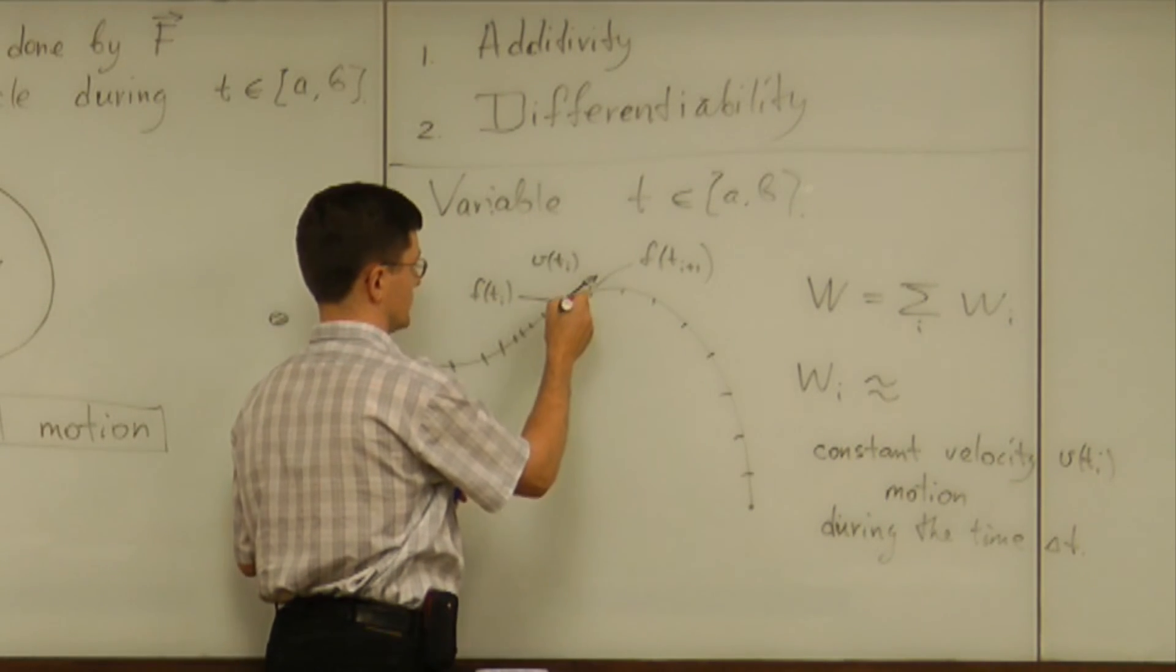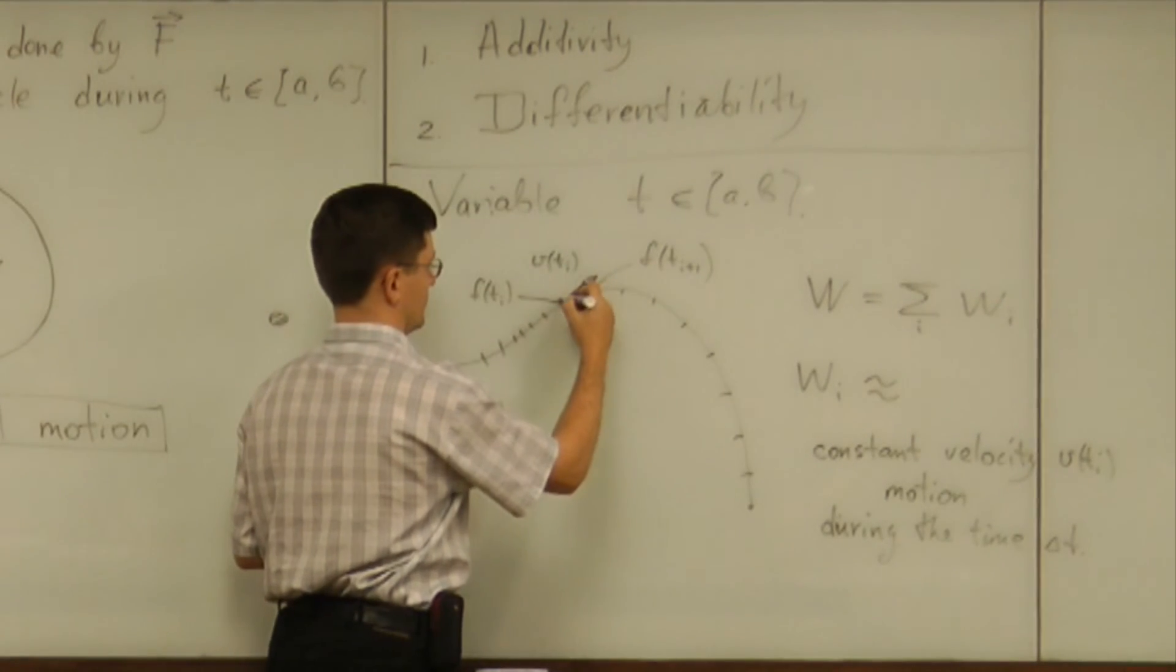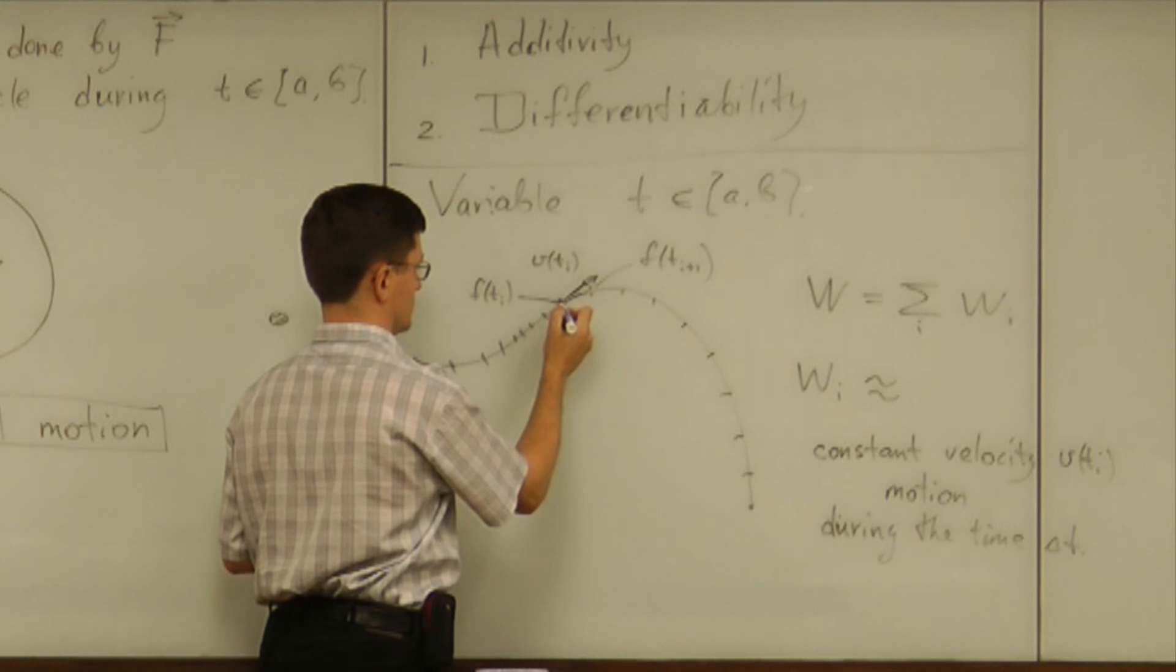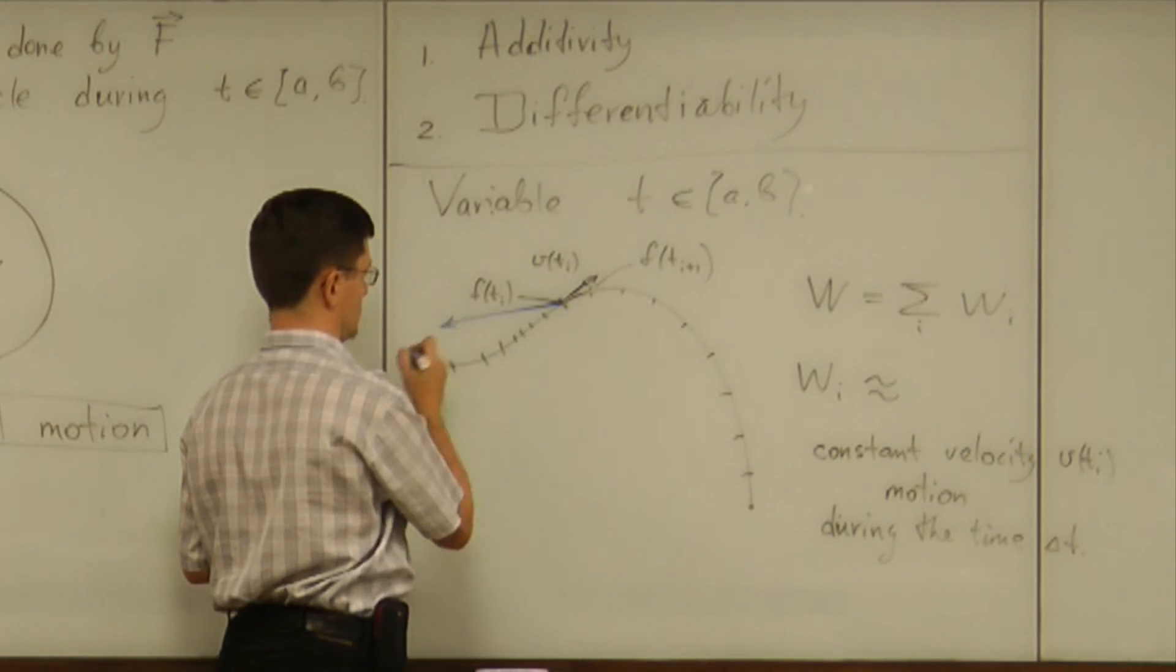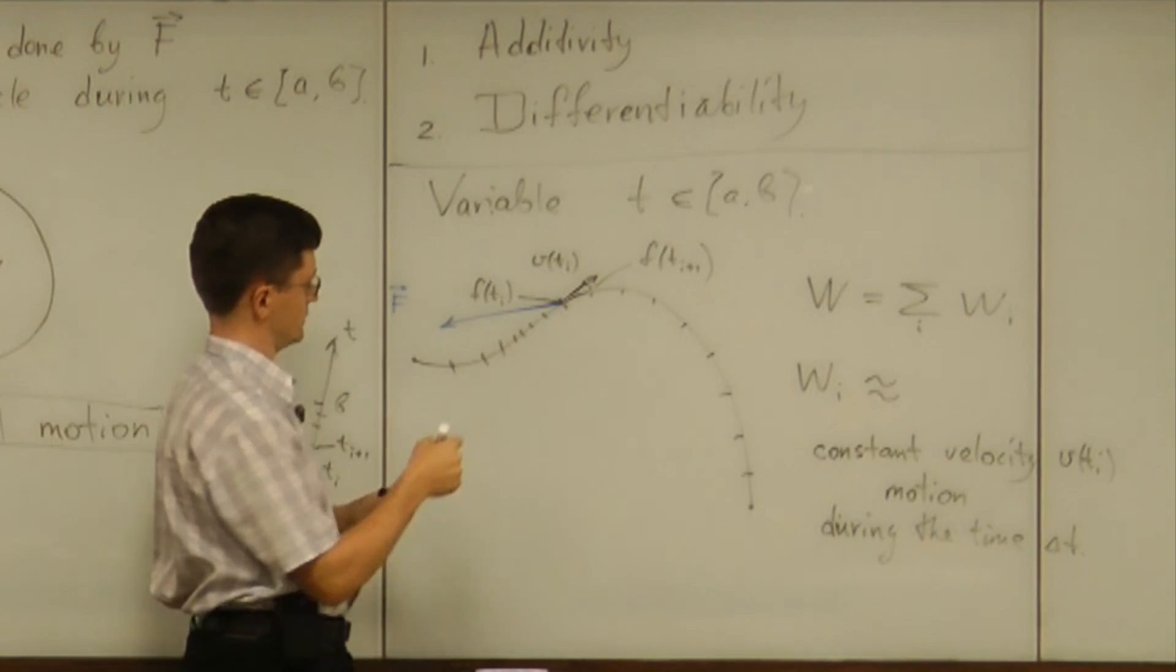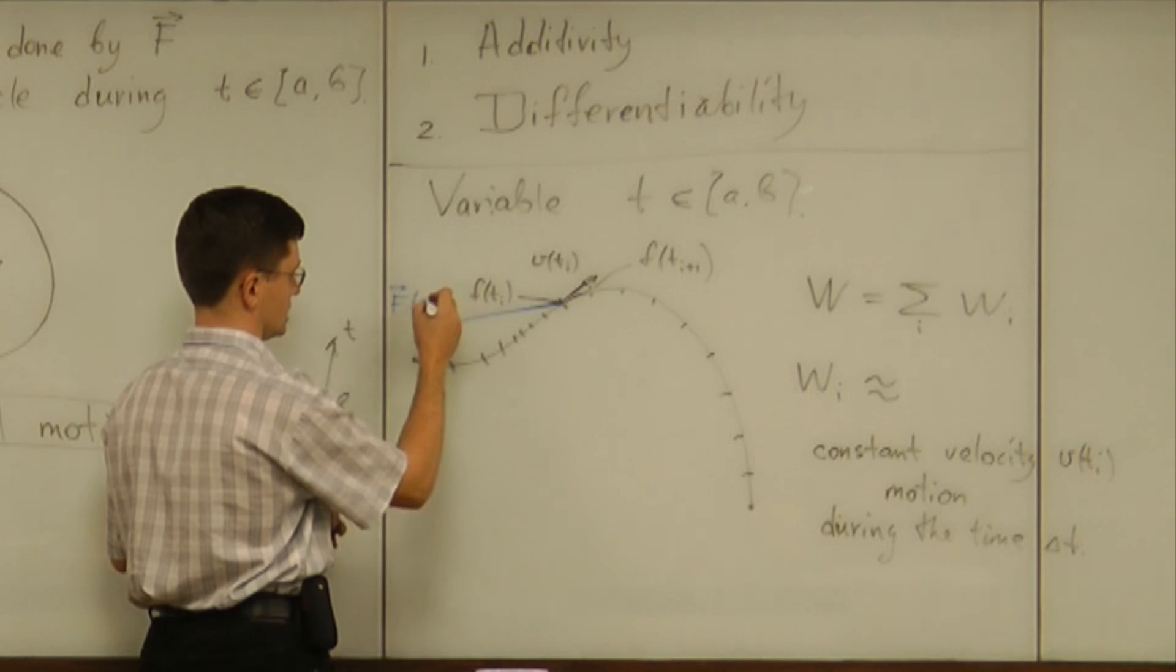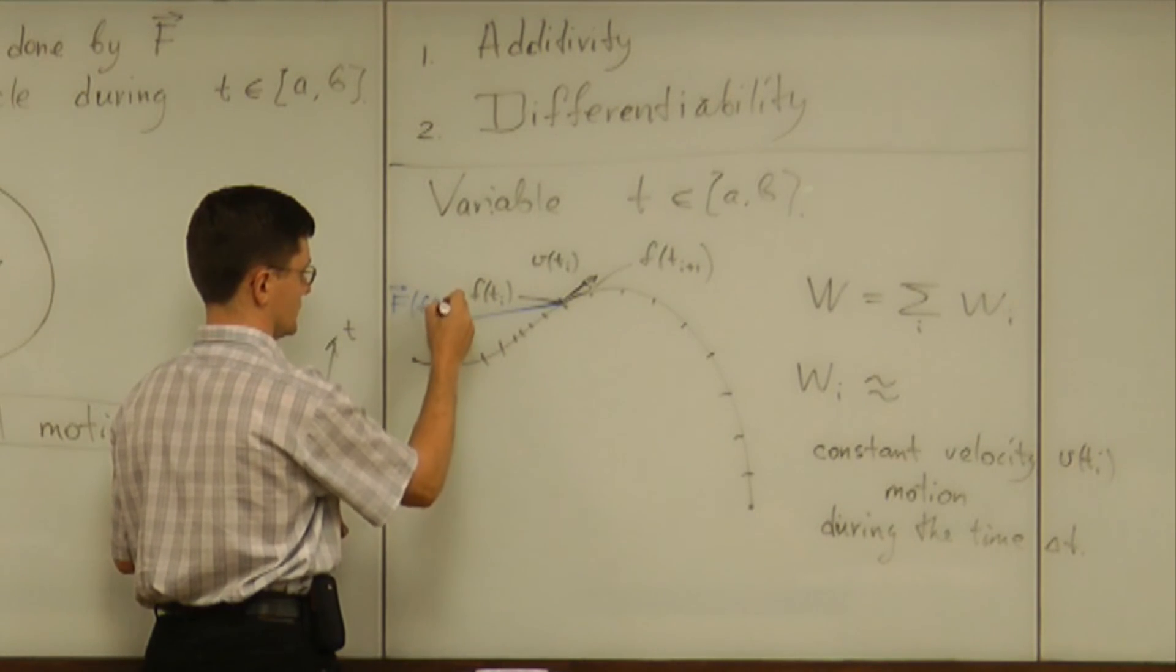the simplest way is to assume that all the forces are like this one. Like the one acting on this point. It doesn't have to be perpendicular. Okay, let's take it this way. So this is f at this point.